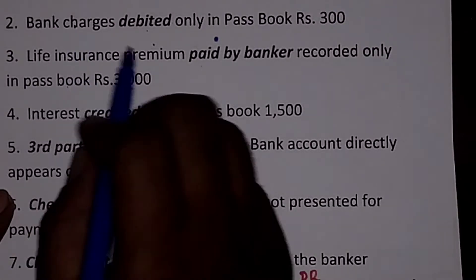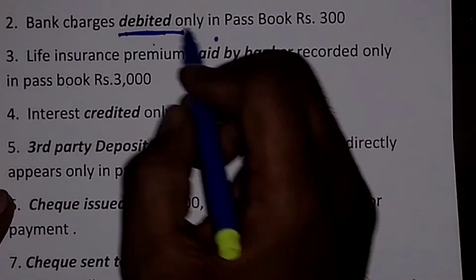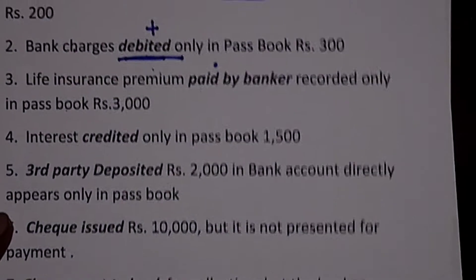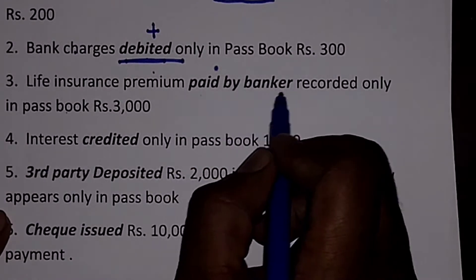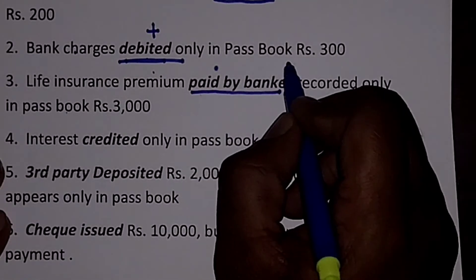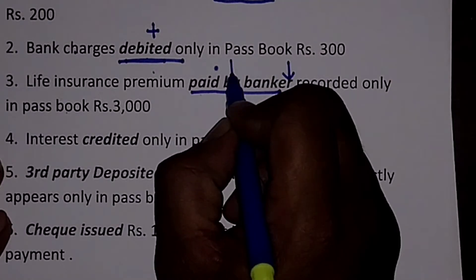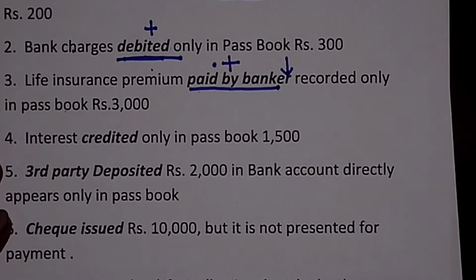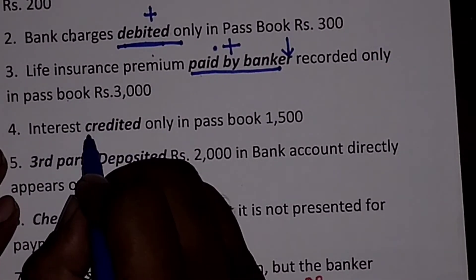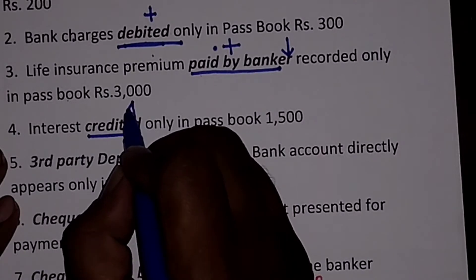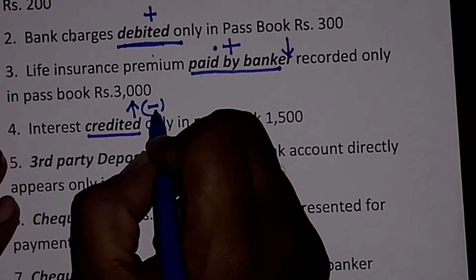Next is bank charges debited — once again debited in pass book, so the amount is plus. Then, life insurance premium paid by banker means cash reduces in the bank account, so once again it becomes a plus item. Fourth is interest credited — 'credited' means increase in pass book. The increase in pass book will become minus, because we are working the problem with pass book balance first.